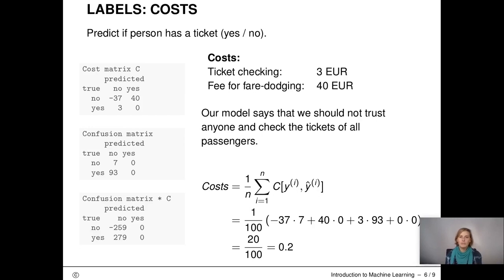Now let's assume that we have 100 passengers. Our current system is that we do not trust anyone and check all passengers. Seven of them turn out to have a ticket. This means that we have an income of 37 times seven, but expenses of three times 93. All in all, we pay 20 euros for the ticket checking per 100 people. We pay 20 cents per person. So is this really a good system that we have here? Probably not.